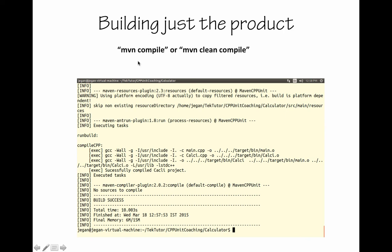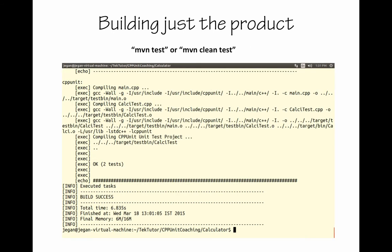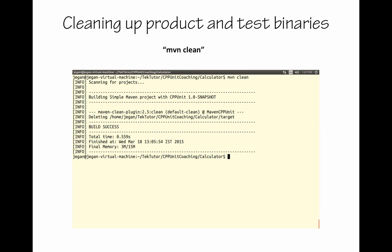When you issue maven compile, this is the output you can expect — it interestingly invokes the makefile, even though Maven is normally used by Java developers. And if you issue maven test or maven clean test, it compiles all projects and triggers the unit test project. When you issue maven clean, it cleans up the target folder, deleting both the bin folder with production binaries and the test bin folder with test binaries.